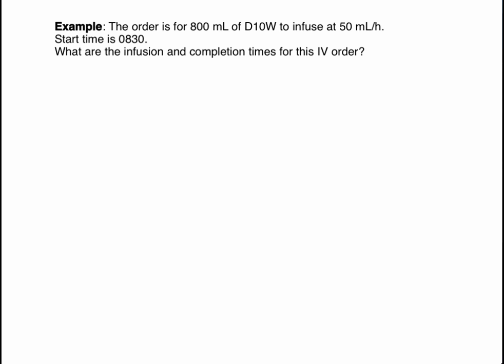In this problem, we're going to be asked to find the infusion time and the completion time. We're told that an order is for 800 milliliters of D10W that needs to infuse at 50 milliliters every hour. We need to start our infusion at 0830. The infusion time is going to be the elapsed time — how long it is going to take from start to finish for the bag.